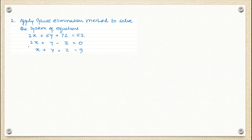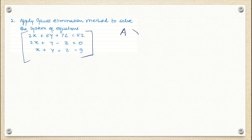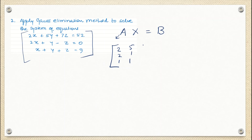Now this is the second question. The second question follows exactly the same procedure, but here I have only 3 equations and only 3 variables. I am going to write down this system of linear equations in AX = B form, where A is the coefficient matrix.